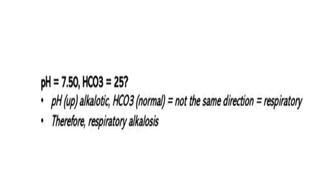Example: if pH is 7.5 and bicarbonate is 25, what would this be? It is respiratory alkalosis. Why? Because the pH is high and the bicarbonate is within the normal range of 22 to 26. Therefore the pH is high and the bicarbonate is normal, so they are going in different directions — then it is respiratory alkalosis.